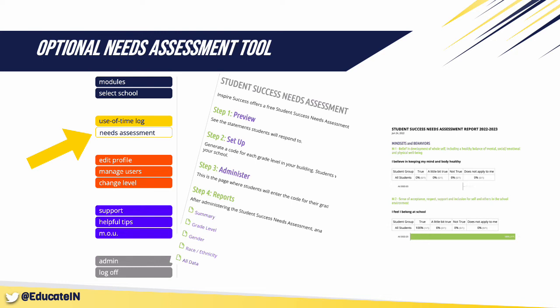In your Carrying the Torch to Student Success account, click on the Needs Assessment link in the left-hand menu. You will then be able to preview, set up, and administer the assessment as it is convenient for you. The system will use the data provided to produce several useful reports. If you choose to use this survey, it's best to give it before starting Module 3 so that you have results as you begin looking at your data.